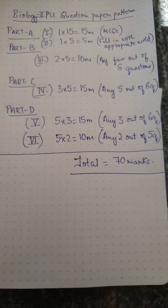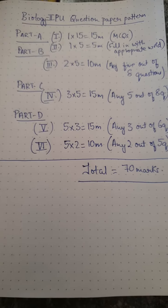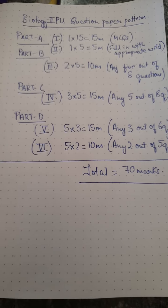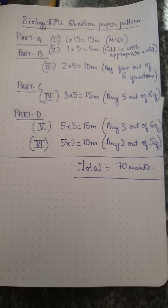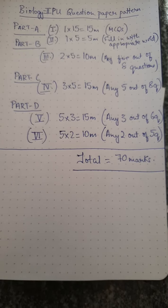One of the best ways to score marks is if you are thorough with Part A and Part B, you can easily score 30 marks, plus additional marks from practicals. The PU Board, even though the syllabus is voluminous, has made the question paper quite easy and student-friendly.